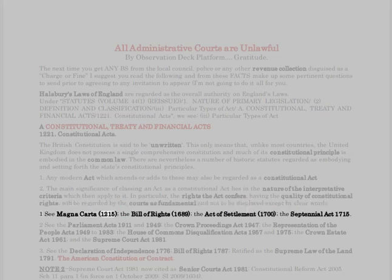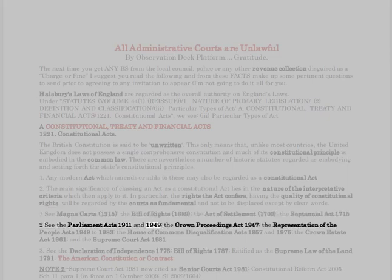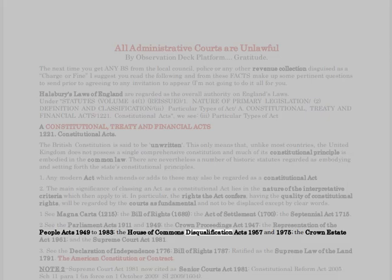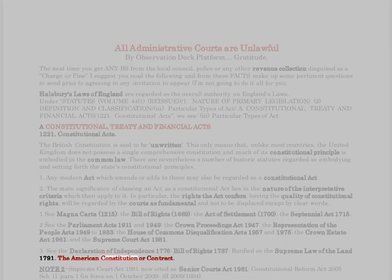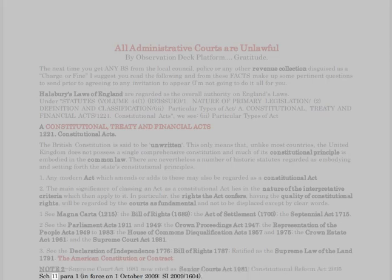Key constitutional statutes include: Magna Carta 1215, the Bill of Rights 1689, the Act of Settlement 1700, the Septennial Act 1715; the Parliament Acts 1911 and 1949, the Crown Proceedings Act 1947, the Representation of the People Acts 1949–1983, the House of Commons Disqualification Acts 1957 and 1975, the Crown Estate Act 1961, and the Supreme Court Act 1981. Also referenced: the Declaration of Independence 1776 and the Bill of Rights 1787, ratified as the supreme law of the land in 1791. Note: the Supreme Court Act 1981 is now cited as the Senior Courts Act 1981 under the Constitutional Reform Act 2005, Schedule 11, paragraph 1, in force 1 October 2009, SI 2009/1604.